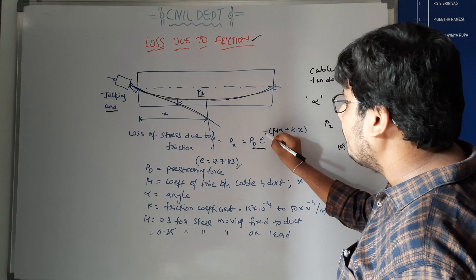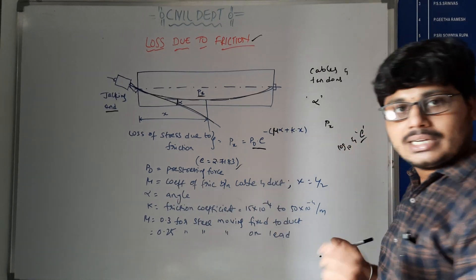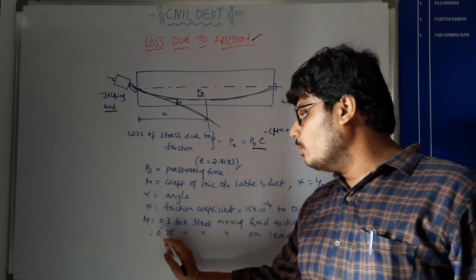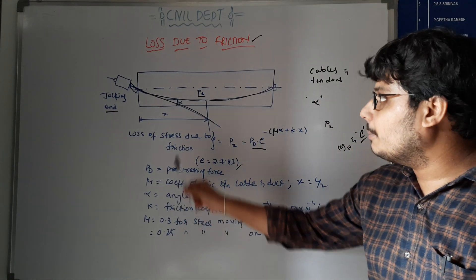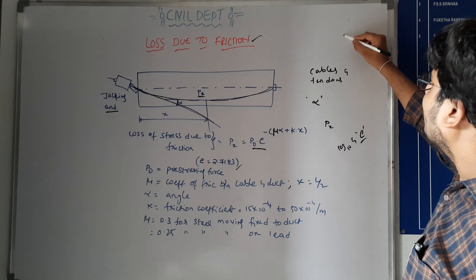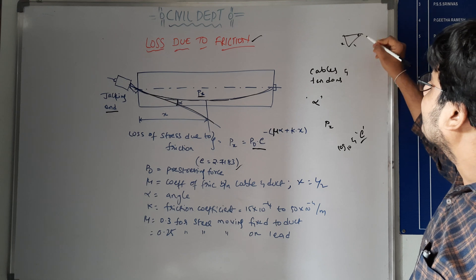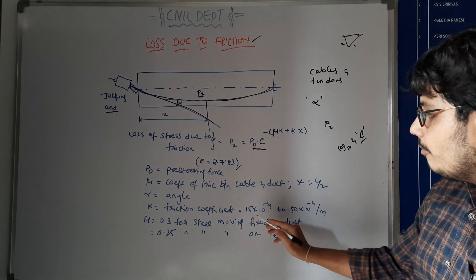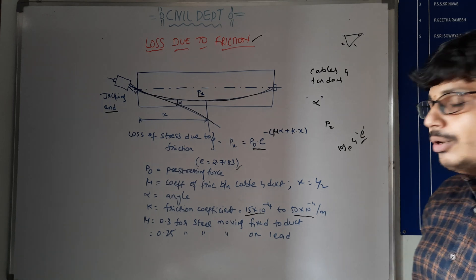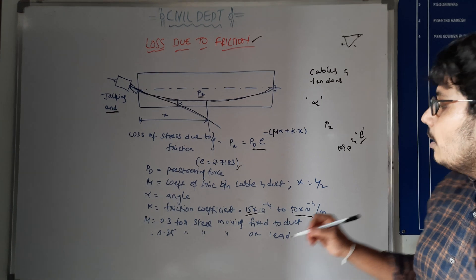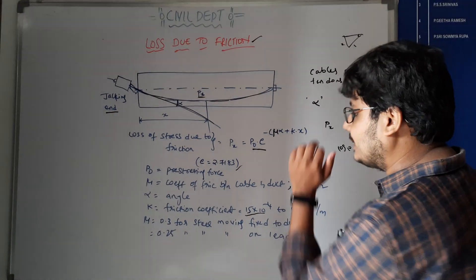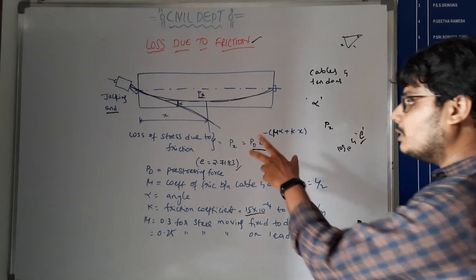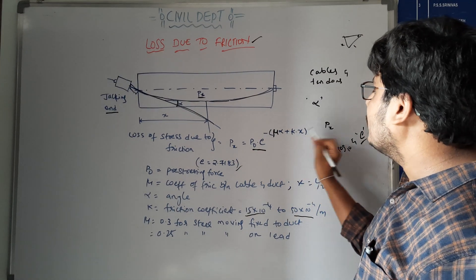The coefficient of friction mu is 0.3 for steel moving on concrete and 0.25 for lead. Alpha is the angle which can be found using trigonometric formulas — sin theta, cos theta, tan theta — using opposite and adjacent sides. K is the frictional wobble coefficient, ranging from 15 × 10⁻⁴ per meter. X is the distance from center to center, i.e., L/2. The formula is: Px = P0 × e^(−(mu × alpha + k × x)).